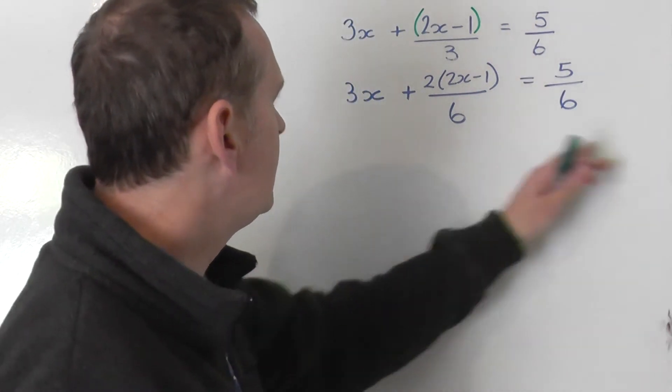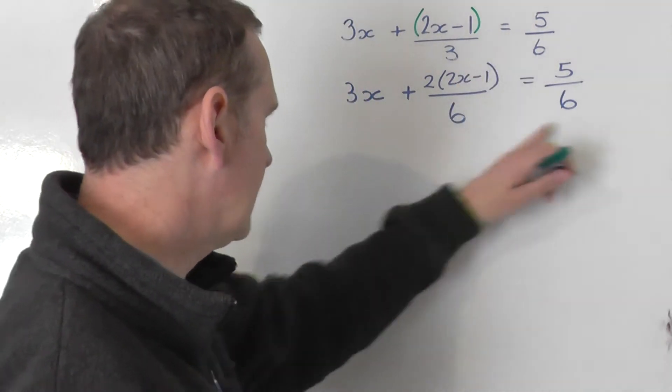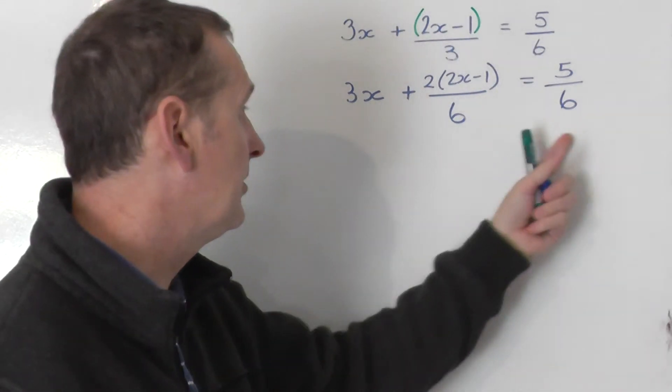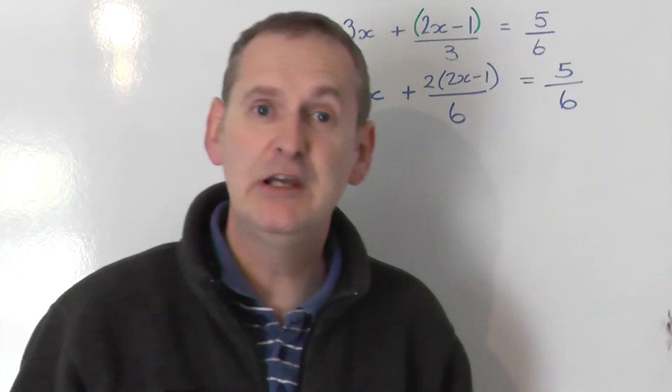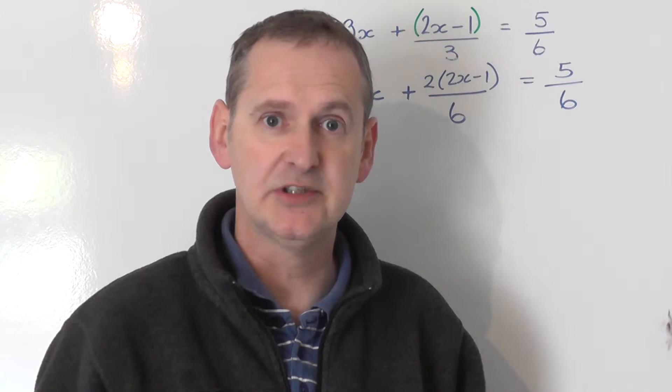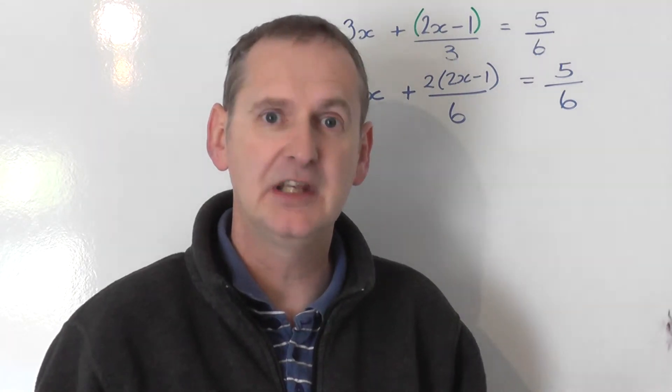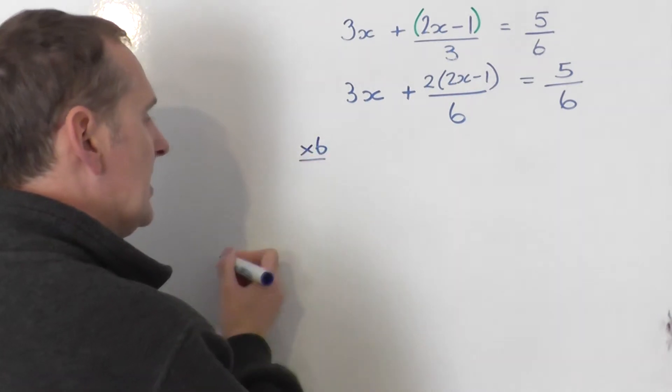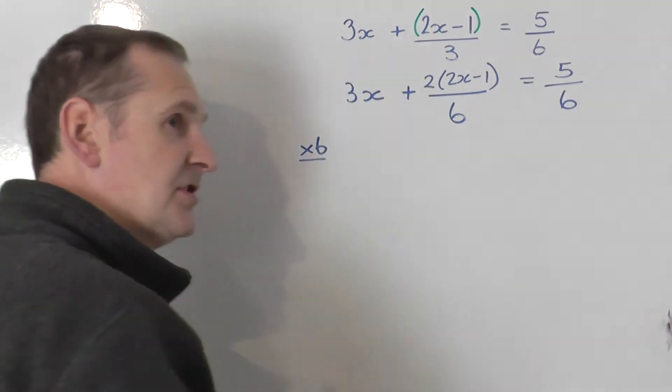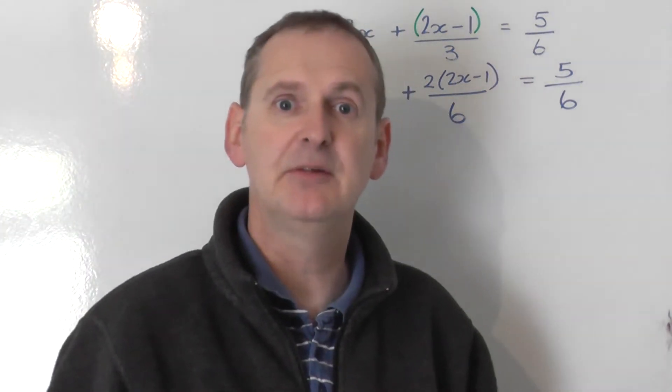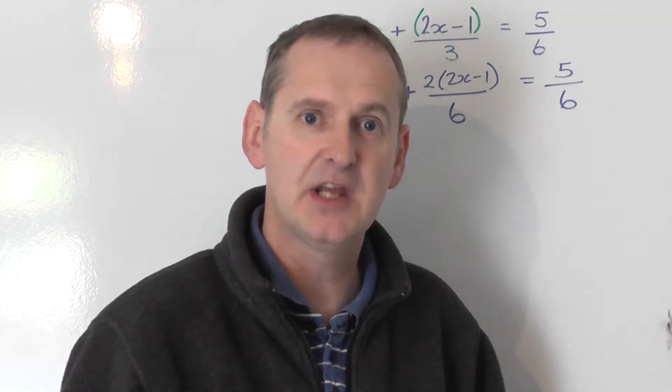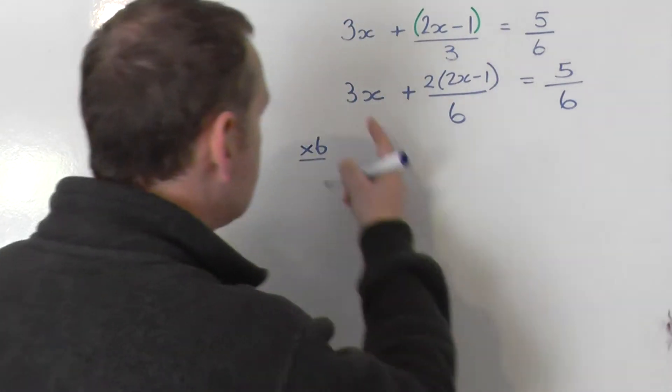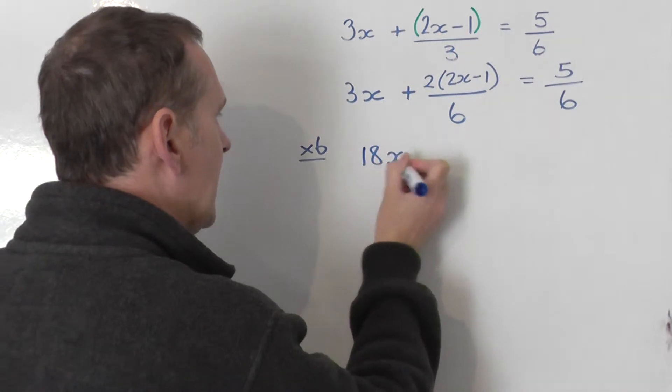So now we've got an equation with brackets in, yes, and fractions in, yes, but the fractions are both over 6. I can now get rid of both those 6s as fractions simply by multiplying everything in the equation by 6. So I times everything by 6, including the first term. You've got to times everything by 6 for it to be a true statement. So 3x times by 6 is 18x.